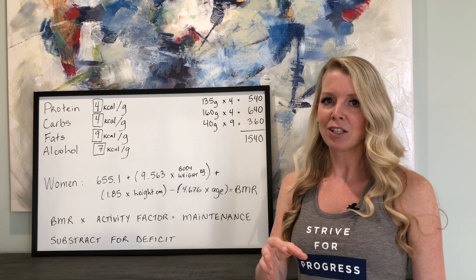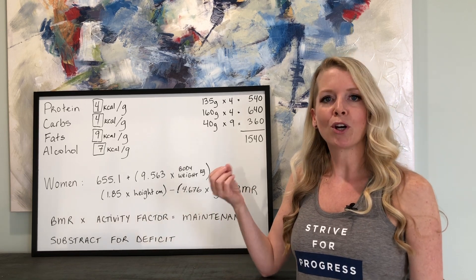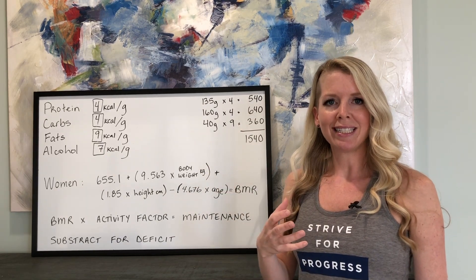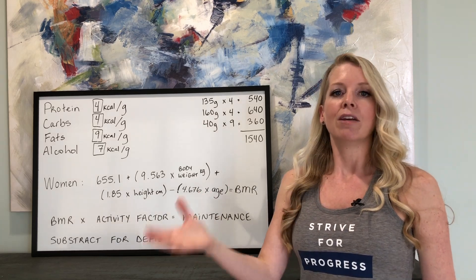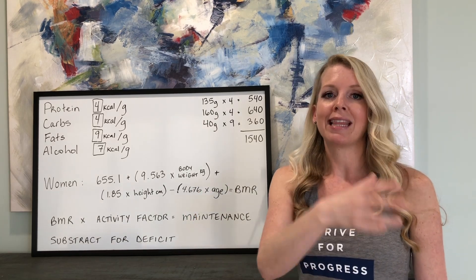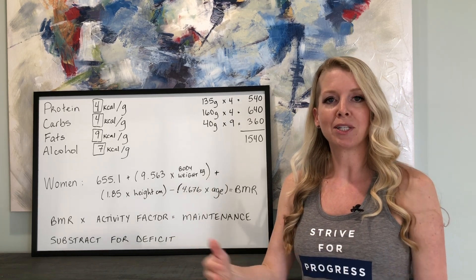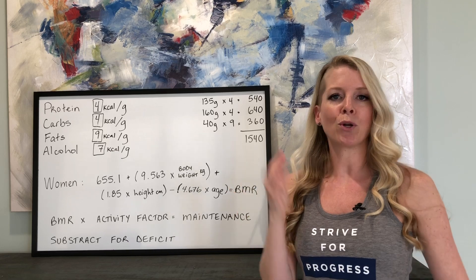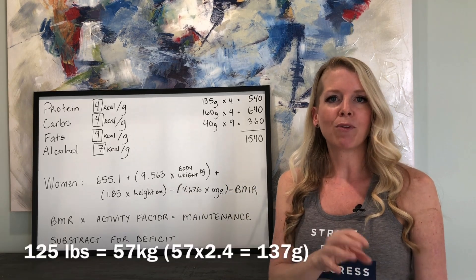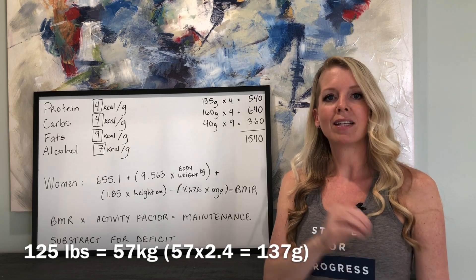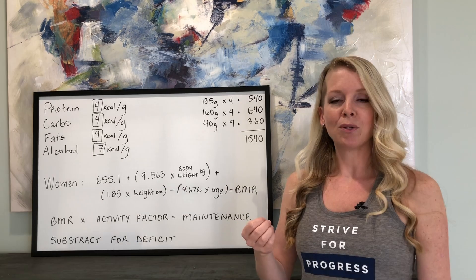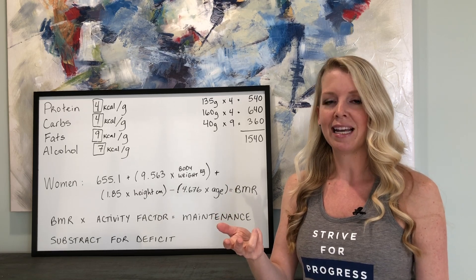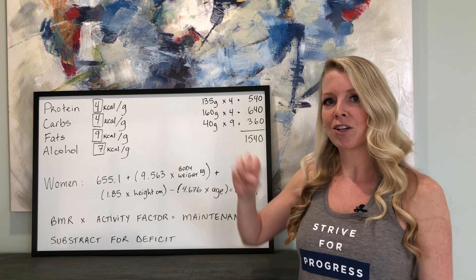I did my weight in kilograms times 2.4, which gave me 137 grams — rounded down to 135 to make it easier. If you're overweight, don't use your actual weight to multiply by the protein range, as you'd be eating too much protein. Instead, support your lean muscle mass. When I started prep, I used 125 pounds as my lean mass target: 125 times 2.4 equals 137. Once you have your protein grams, subtract those calories from your caloric budget.